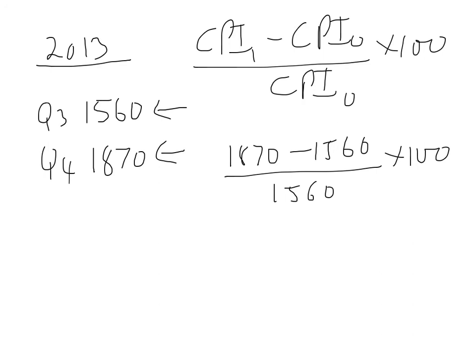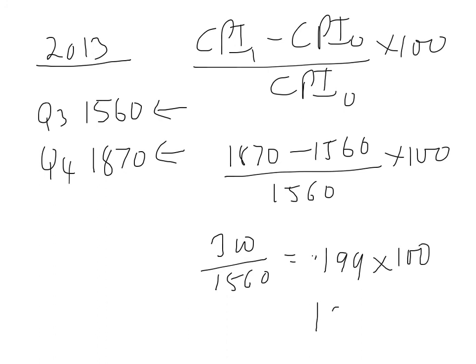Bring out your trusty cell phone - calculators are pretty good on smartphones. 1870 minus 1560 equals 310, divided by 1560 equals 0.198 to three decimal places, times 100 gives 19.9%. So that's our rate of inflation for the quarter.